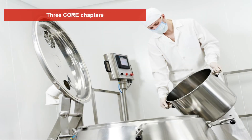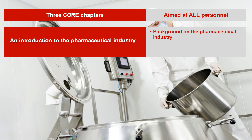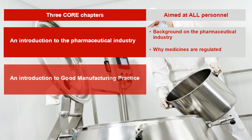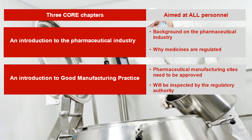There are three core chapters aimed at all personnel. These are an introduction to the pharmaceutical industry, which gives a background on the pharmaceutical industry and why medicines are regulated. There is also an introduction to good manufacturing practice, which explains that pharmaceutical manufacturing sites need to be approved to make medicines and that they will be inspected by the regulatory authority.